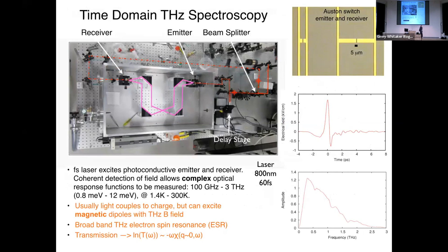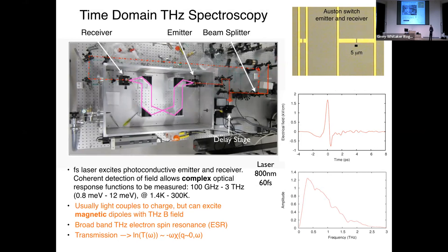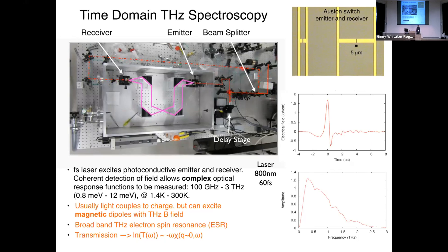The kinds of experiments we're doing are time-domain terahertz spectroscopy, where we use an ultrafast laser propagating around the table to create and detect a pulse of terahertz radiation about a picosecond long — the inverse of a picosecond is a terahertz. For magnetically interesting but electrically uninteresting materials, the time-varying magnetic field of the light couples to the magnetic dipoles, and we can do very sensitive, high-precision, high-resolution measurements of the frequency-dependent magnetic susceptibility.